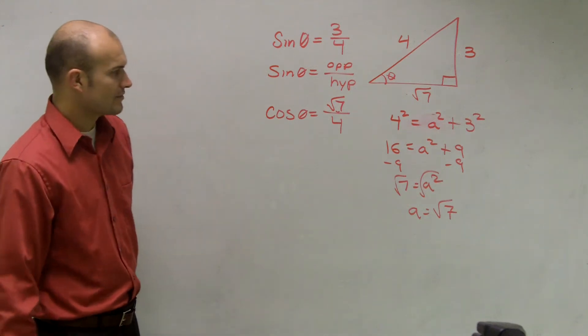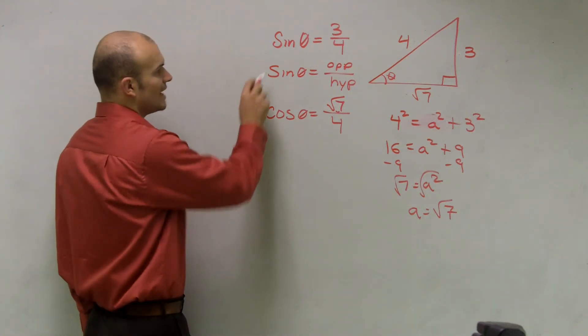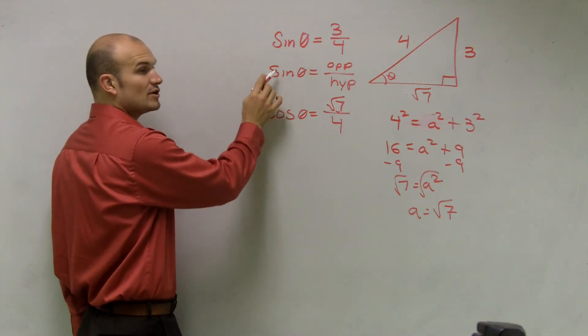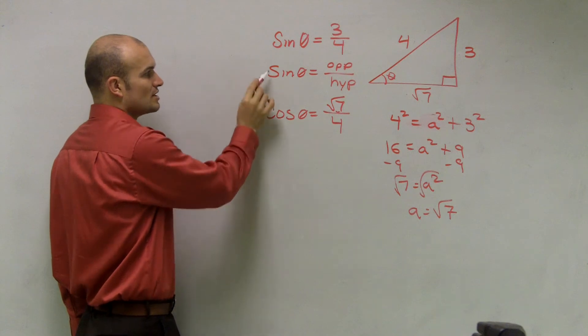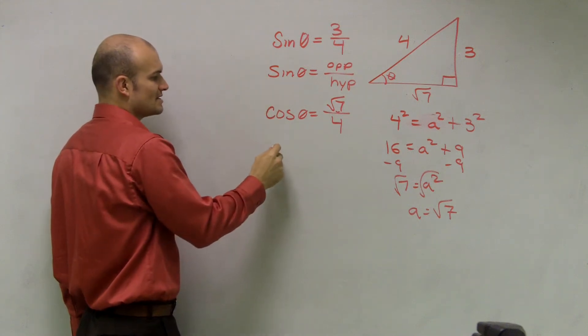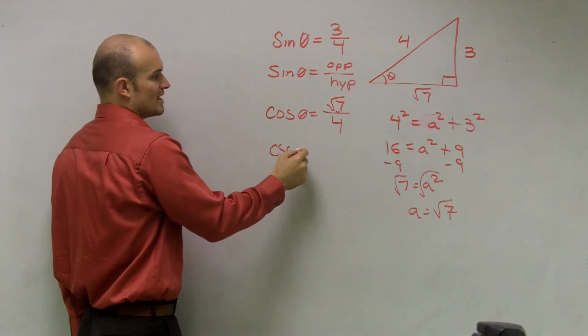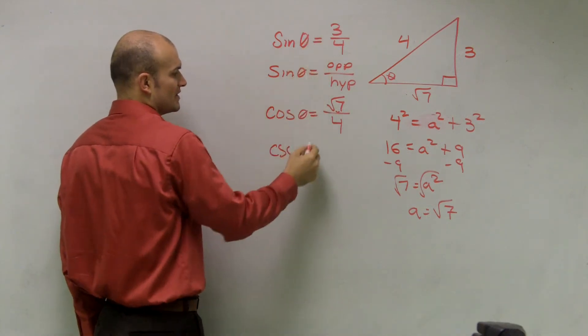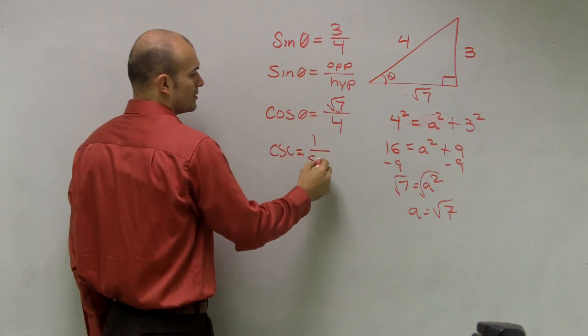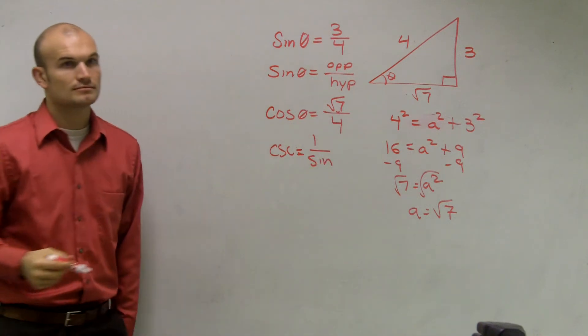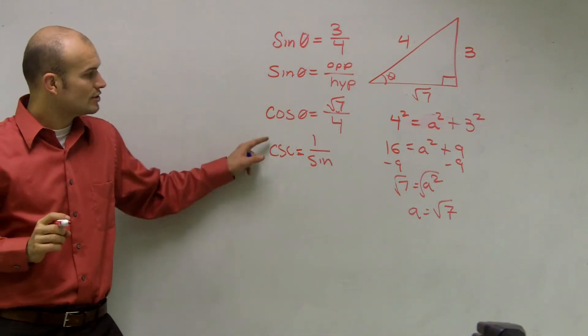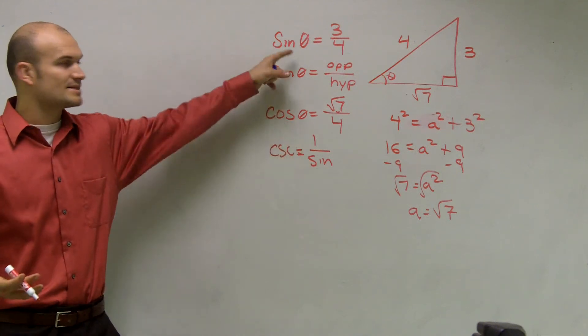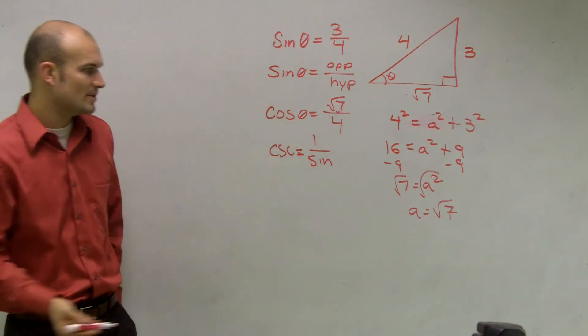All right, then, let's just do the reciprocal of these two functions. Remember, the reciprocal of sine is cosecant, so that's going to be reciprocal of this, one over sine. Remember, the cosecant is reciprocal of sine. Now I just want to show you guys why, a lot of you might say, oh, you just flip it. Well, why do we just flip it?